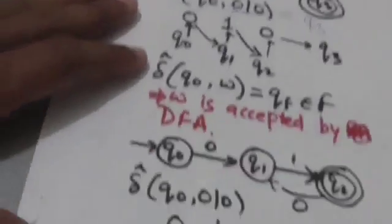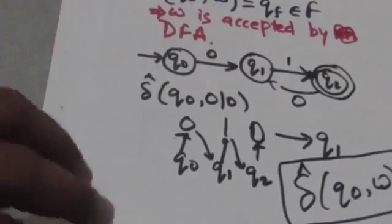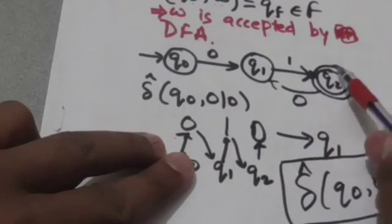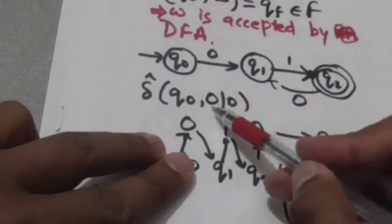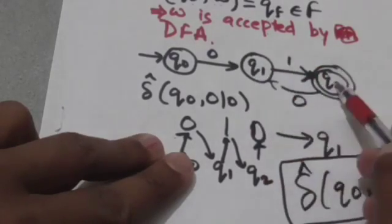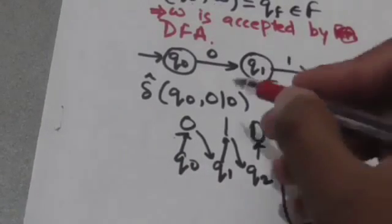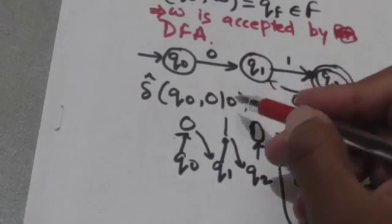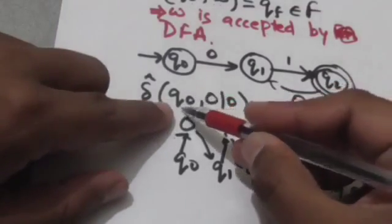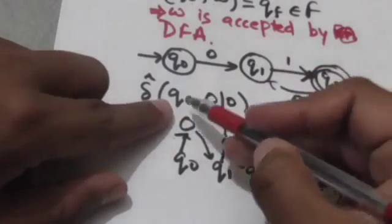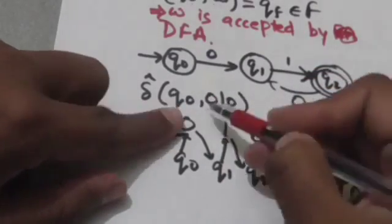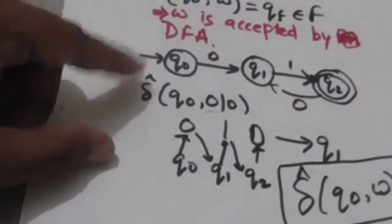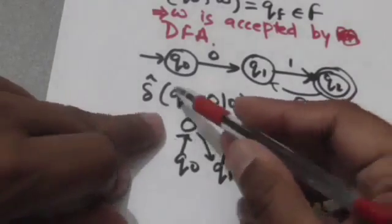Now suppose this is a DFA whose initial state is Q0 and its final state is Q2. We have to find out whether the string 010 is accepted by this DFA or not. We will apply this string 010 to its initial state, and if reading this string causes the DFA to jump from its initial state to the final state, then this string will be accepted; otherwise it will be rejected. So we have to find the output of the extended transition function for initial state Q0 and string 010.